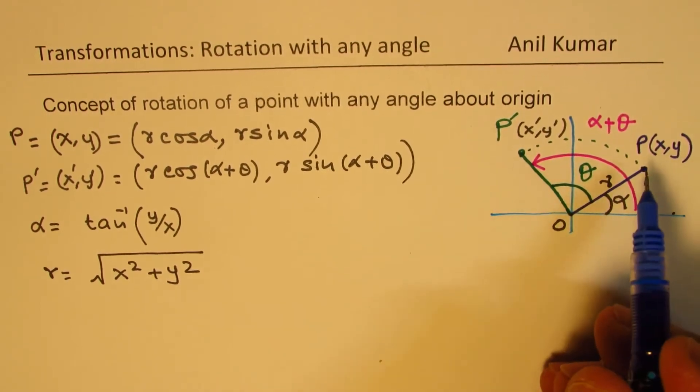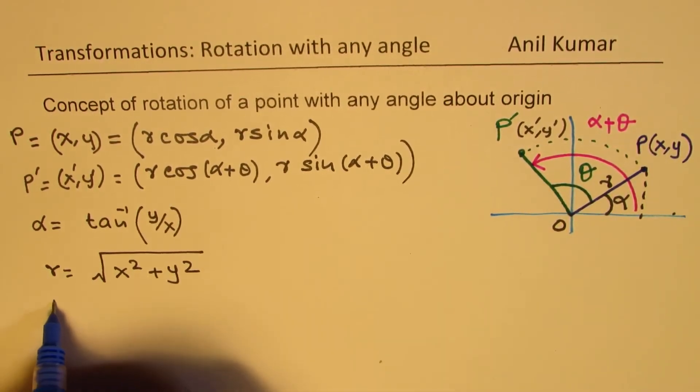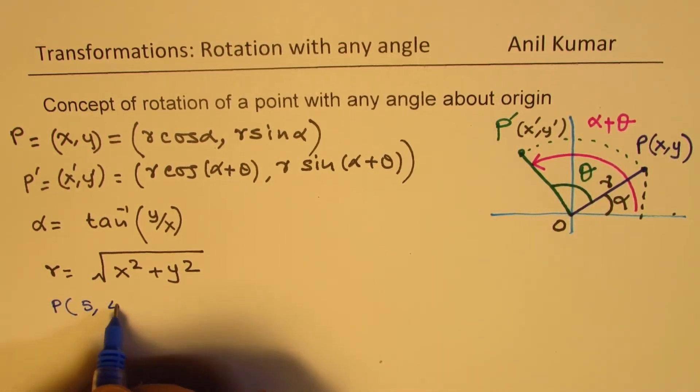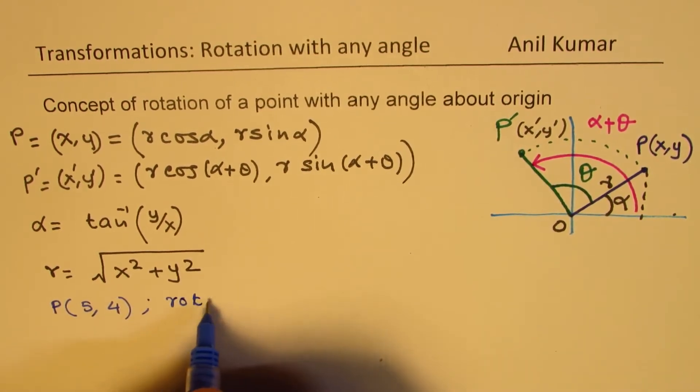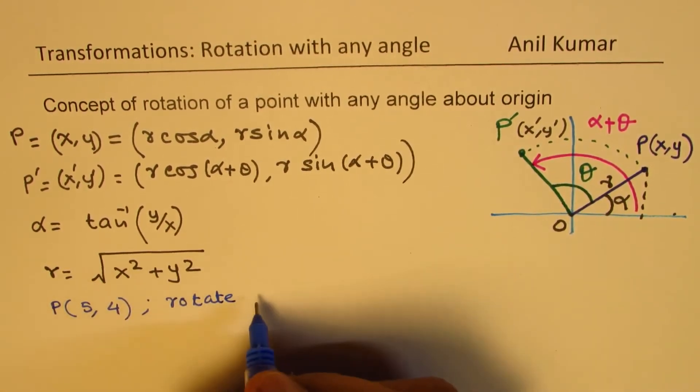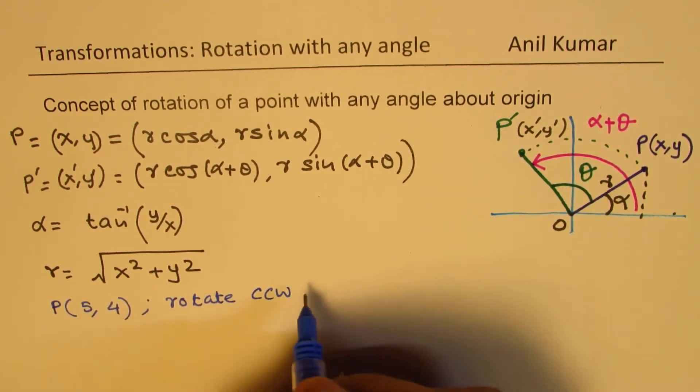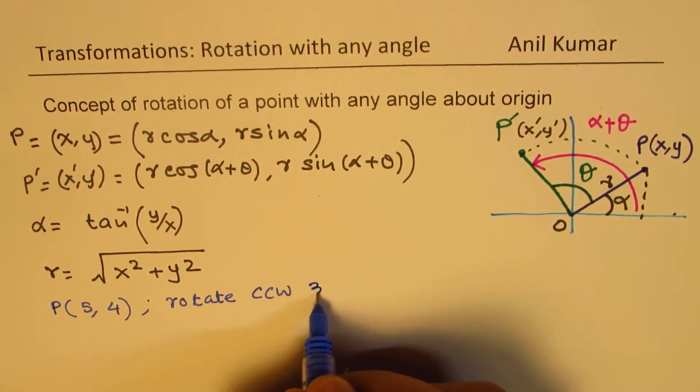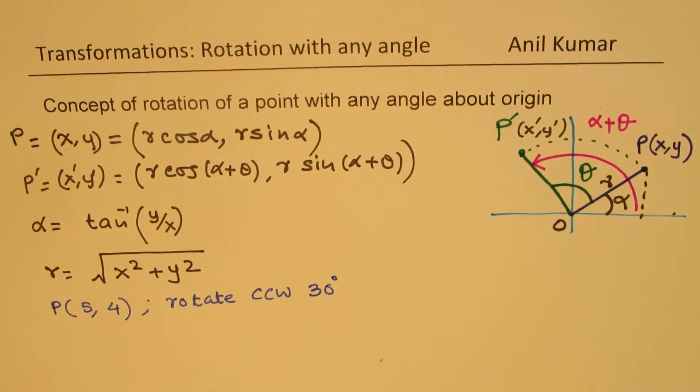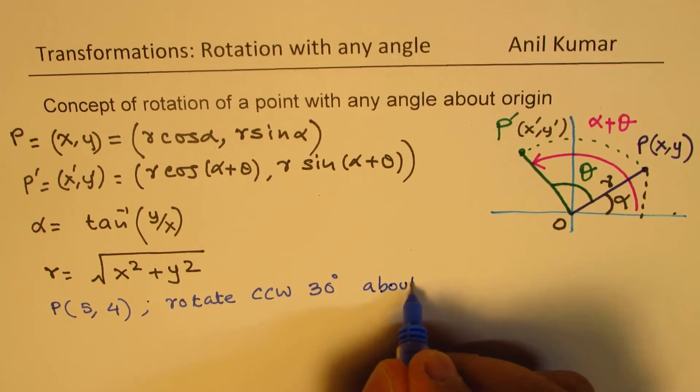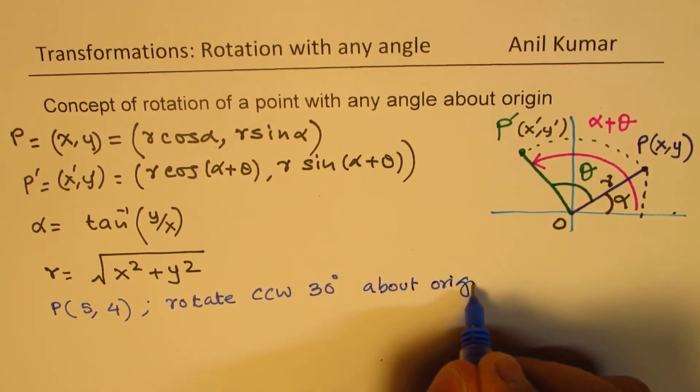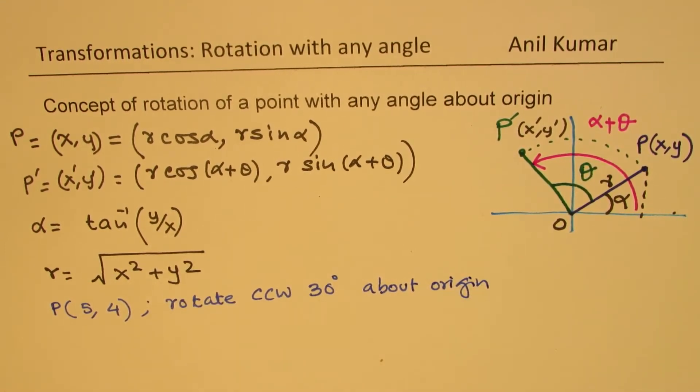Now let's take an example. So let's say we have a point P, which is at some value, let's say 5, 4. So we've just taken a point P. And what we need to do is to rotate counterclockwise through an angle of, let us say, 30 degrees. So that is the rotation about origin.